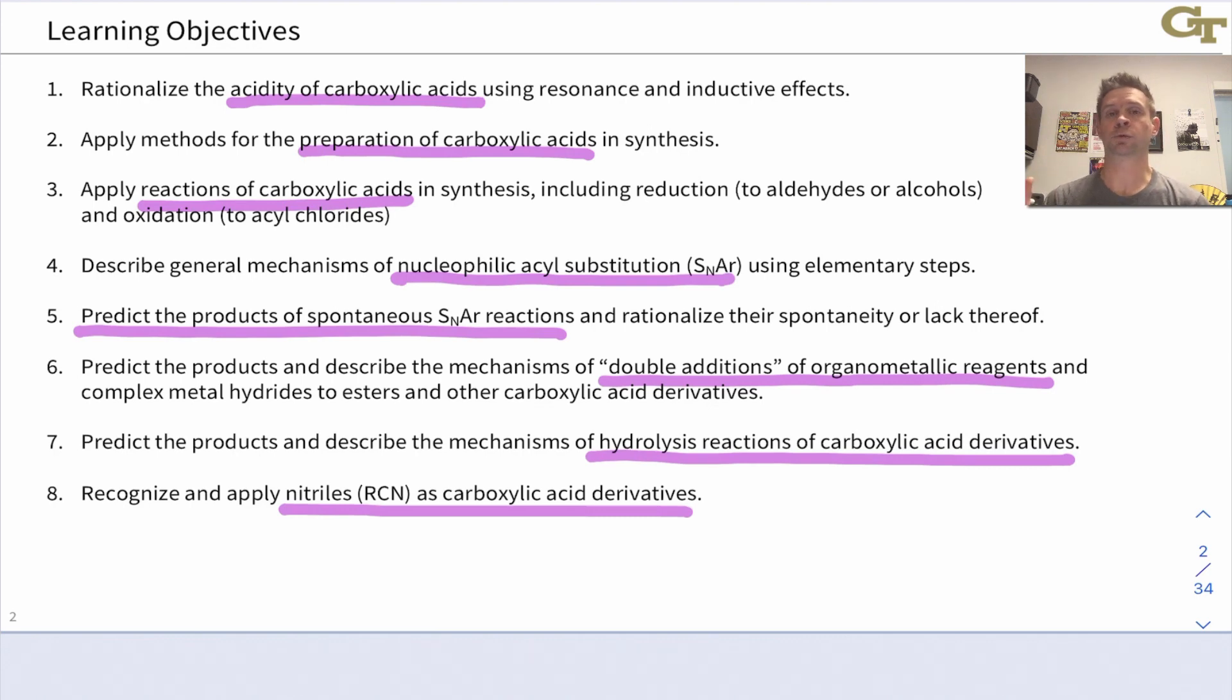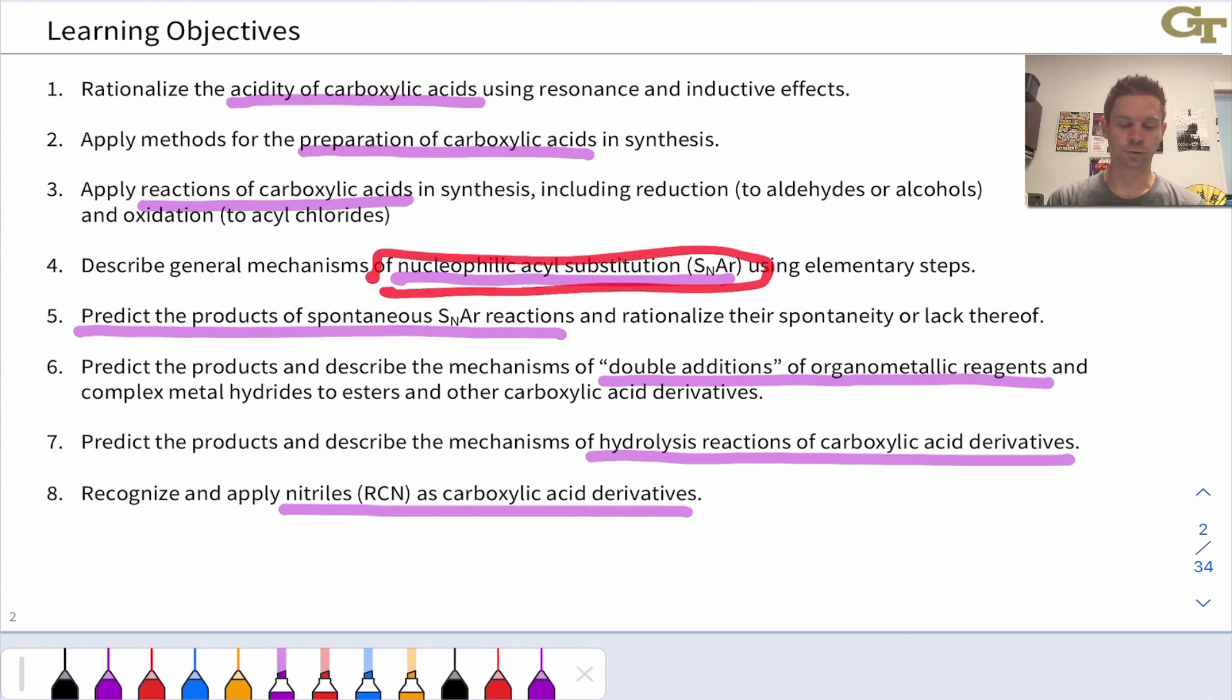In the latter half of the unit we're going to focus on a very important general reaction type for carboxylic acids and carboxylic acid derivatives known as nucleophilic acyl substitution or SNAr, also known as acylation of nucleophiles.